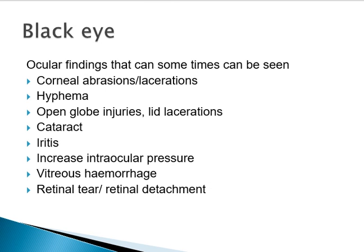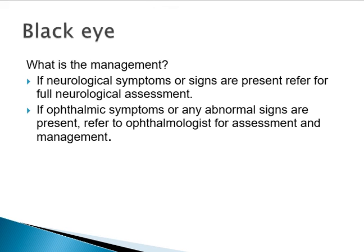Any significant injury to the eye can cause an increase in intraocular pressure, leading to secondary glaucoma. Vitreous hemorrhage can also occur. Retinal tear or retinal detachment can sometimes be associated with vitreous hemorrhage in patients with ocular trauma. So any patient who comes with black eyes may have no problem with vision, or may have a significant problem with the eyes.